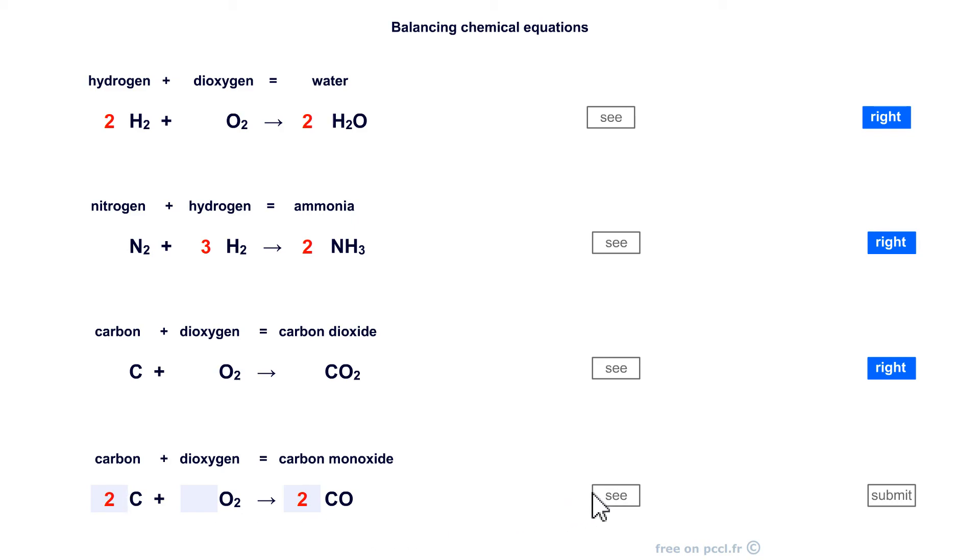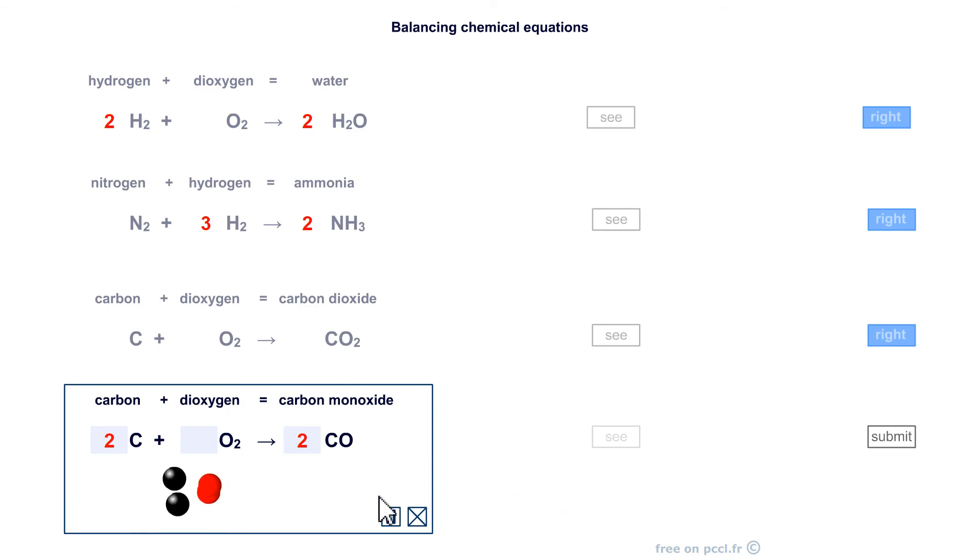As soon as we have placed a coefficient we check that we have not modified anything else. Is that possible? Yes. These are two carbon atoms that will react to yield this toxic gas, carbon monoxide.